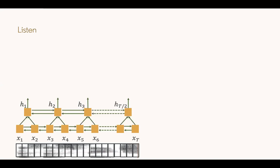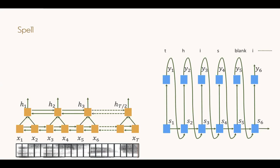Then there's the Spell level — another LSTM model which acts as a language model. Instead of words, the Spell model outputs letters, with blanks. A letter sequence with a blank on both sides becomes a word. It is a normal LSTM model where the current letter is dependent upon the current hidden state of the LSTM and the previous letter output by the previous state.